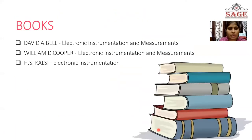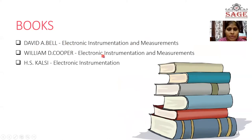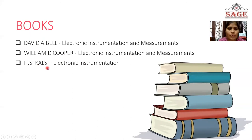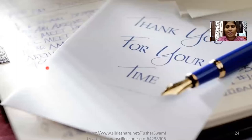These are the reference books: Electronic Instrumentation and Measurements by David A. Bell, Electronic Instrumentation and Measurements by William D. Cooper, and Electronic Instrumentation by H.S. Carlson. You can refer to these books for the CRO. Thank you friends, see you again. Bye.